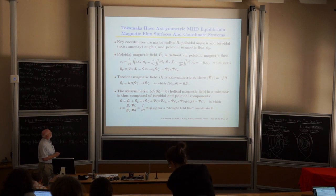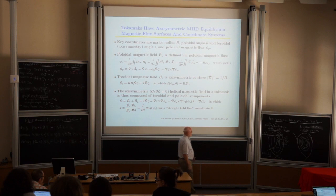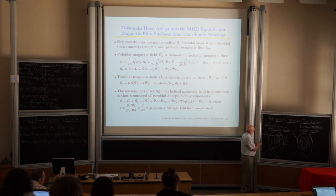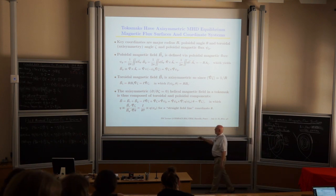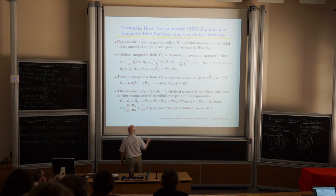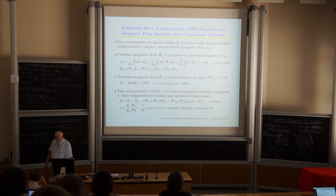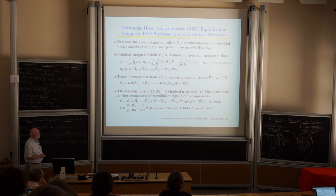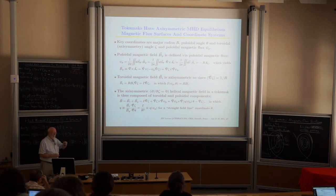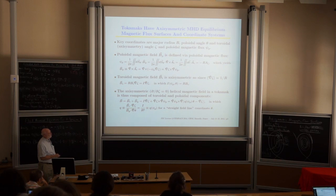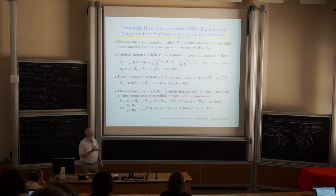The toroidal magnetic field is created by external coils and decreases as 1/R. But R times that toroidal field is a parameter we call capital I — it's actually a poloidal current. We write the magnetic field in terms of both covariant and contravariant base vectors — mixed co-contravariant. It can also be written in a totally contravariant form: grad(psi_poloidal) cross grad(zeta), where Q is the safety factor, one over the rotational transform of the field lines.